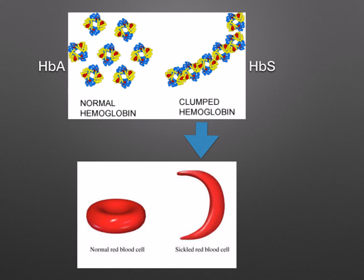HbS stands for hemoglobin S. These hemoglobin S molecules stick together and form long fibres. These fibres distort the red blood cells, making them sickle or crescent-shaped, as you can see on the right. These sickle cells are unable to carry oxygen and may block small capillaries.